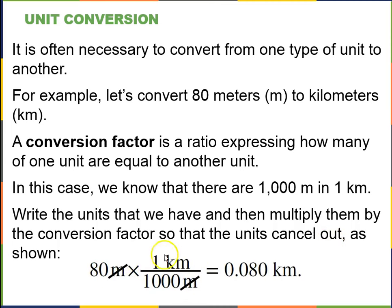Example, 80 meters. I multiply by a conversion factor equal to 1. So 1 kilometer over 1,000 meters equals 1, since those are the same. And I've set it up so that meters in the bottom cancels meters in the top. And you end up with 80 times 1 divided by 1,000, and you get kilometers. And if I do this in my calculator, 80 times 1 divided by 1,000, I get 0.08.